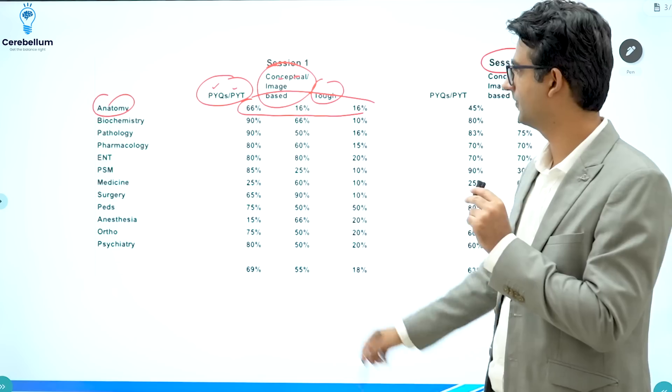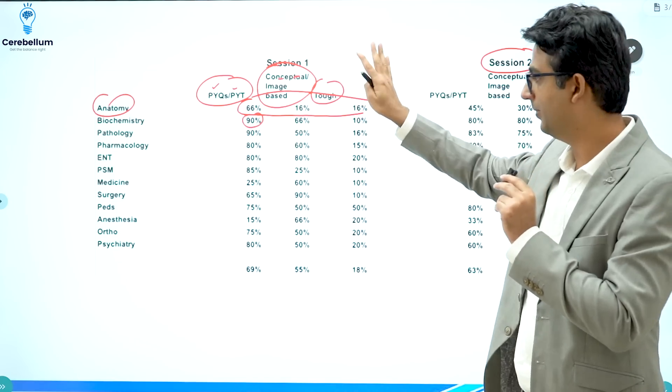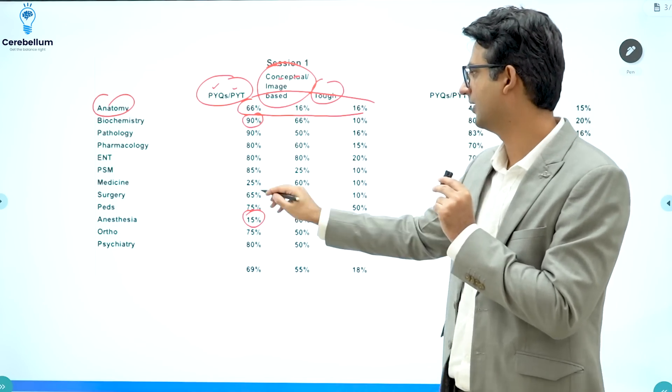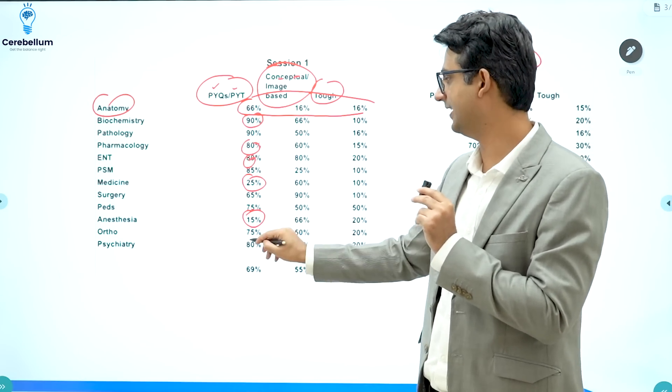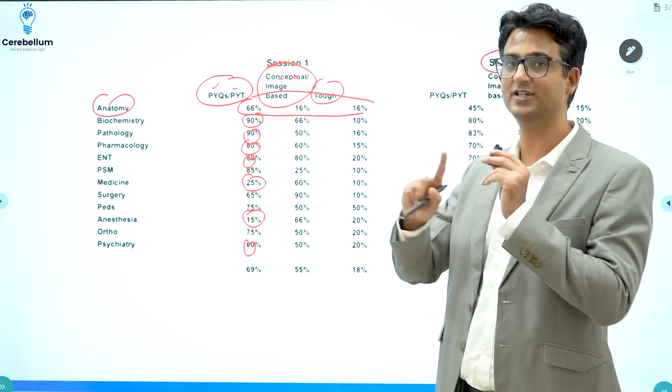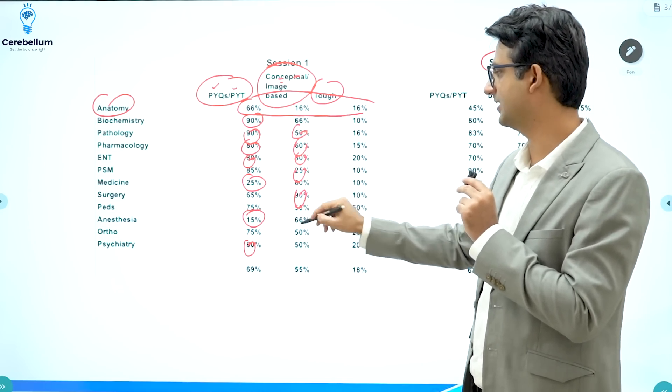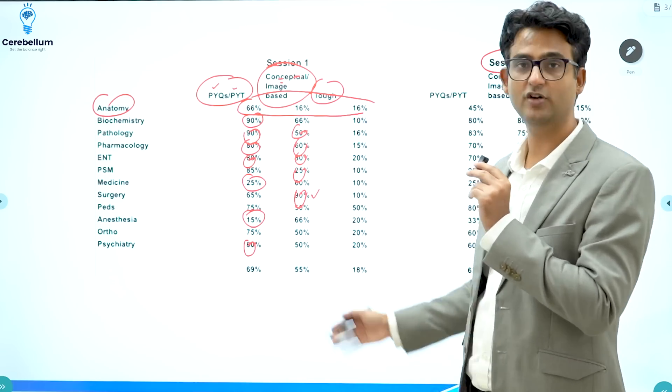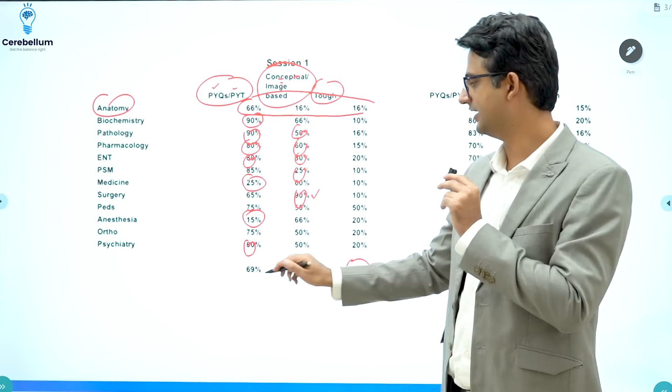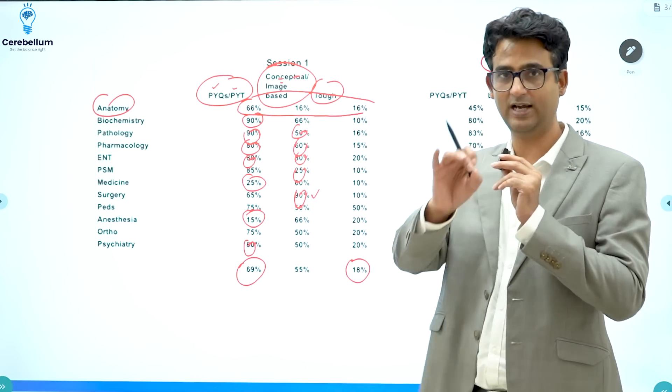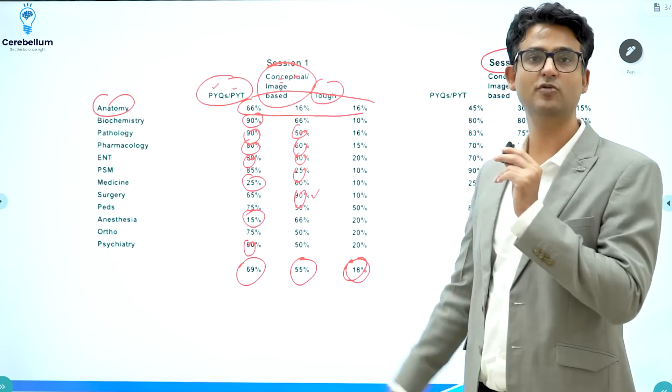Now let us look at the number. For some subjects like biochemistry, almost 90% of questions were PYQs or PYT based even in session 1. But even in session 1, there were subjects like anesthesia or surgery where the number of PYQs were very less. For most of the subjects however, you can see very high numbers of PYQs, PYTs. We are talking about session 1. Let us talk about the conceptual and image based questions. Now you see a trend here. Everything is around 50 to 60%. In some subjects it is almost 90%. But for majority of subjects, it is somewhere between 50 to 60%. And the proportion of tough question is around 18%. So here is the cumulative data. Teachers say that around 69% of the questions were PYQs or PYTs. I am talking about session 1 again. Almost 55% of the questions were concept based or image based. And around 18% of questions were tough.